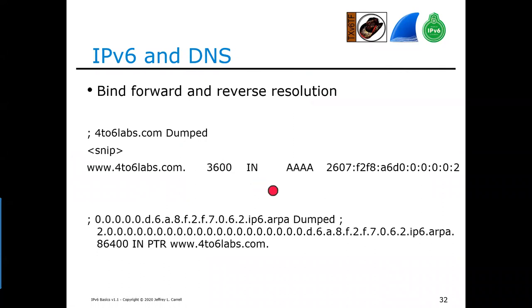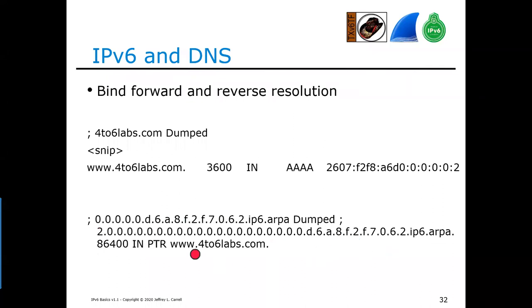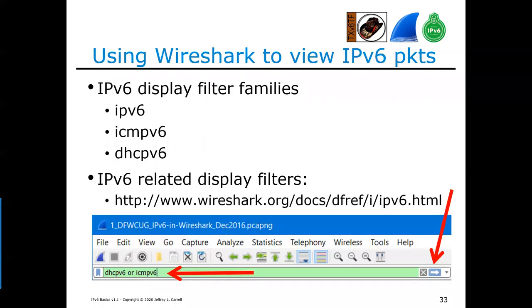For DNS, IPv6 uses a quad-A (AAAA) record, the equivalent of an A record for v4. The reverse pointer lookup breaks down every nibble of the 128-bit address. Most DNS applications will allow you to tick a box to auto-generate the reverse pointer.